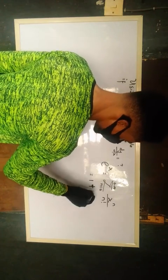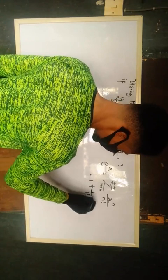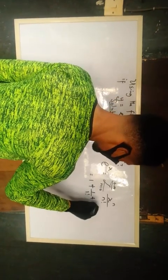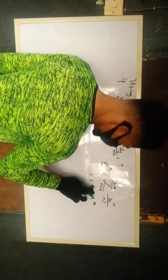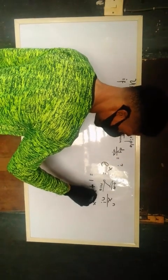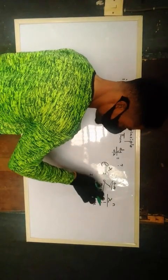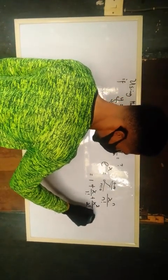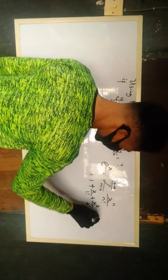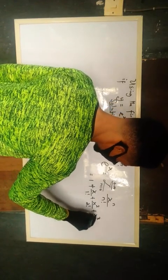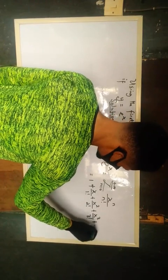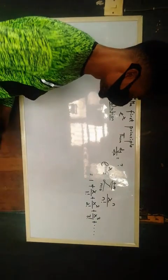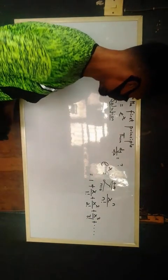we have x over 1 factorial, plus when n is equal to 2, we have x squared over 2 factorial, plus when n is equal to 3, we have x squared over 3 factorial, plus and so on. So, I'm going to use this in this solution today.